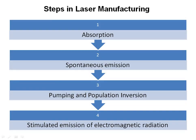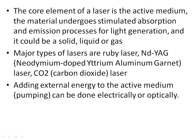The steps in laser production are: absorption, spontaneous emission, pumping and population inversion, and stimulated emission of electromagnetic radiation. The core element of a laser is the active medium. The material undergoes stimulated absorption and emission processes for light generation, and it could be a solid, liquid or gas. Major types of lasers are ruby laser, ND-YAG (neodymium-doped yttrium-aluminum-garnet) laser, and CO2 (carbon dioxide) laser. Adding external energy to the active medium — pumping — can be done electrically or optically.